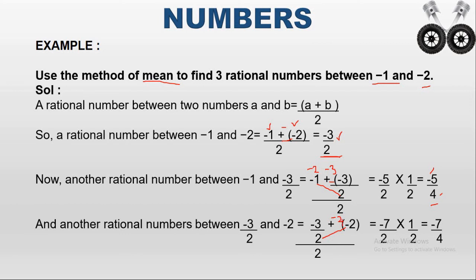The answer is minus seven. The denominator is two; when it comes to the numerator it becomes one by two. So minus seven into one is minus seven, and two into two is four. The next rational number is minus seven by four.